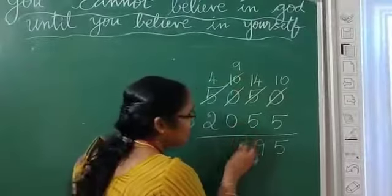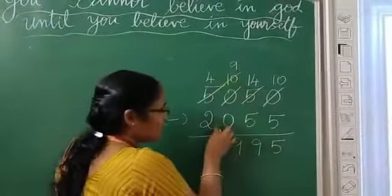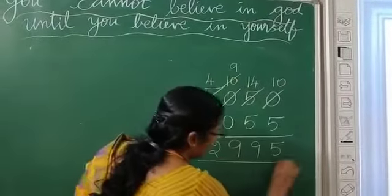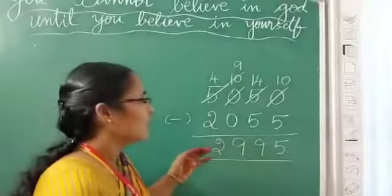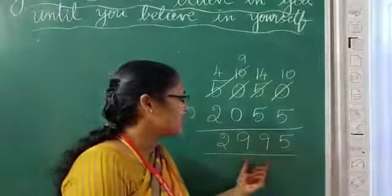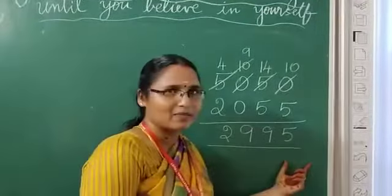9 minus 0? 9. 4 minus 2? 2. So Lakshmi's mother has 2995 rupees balance now. Okay?